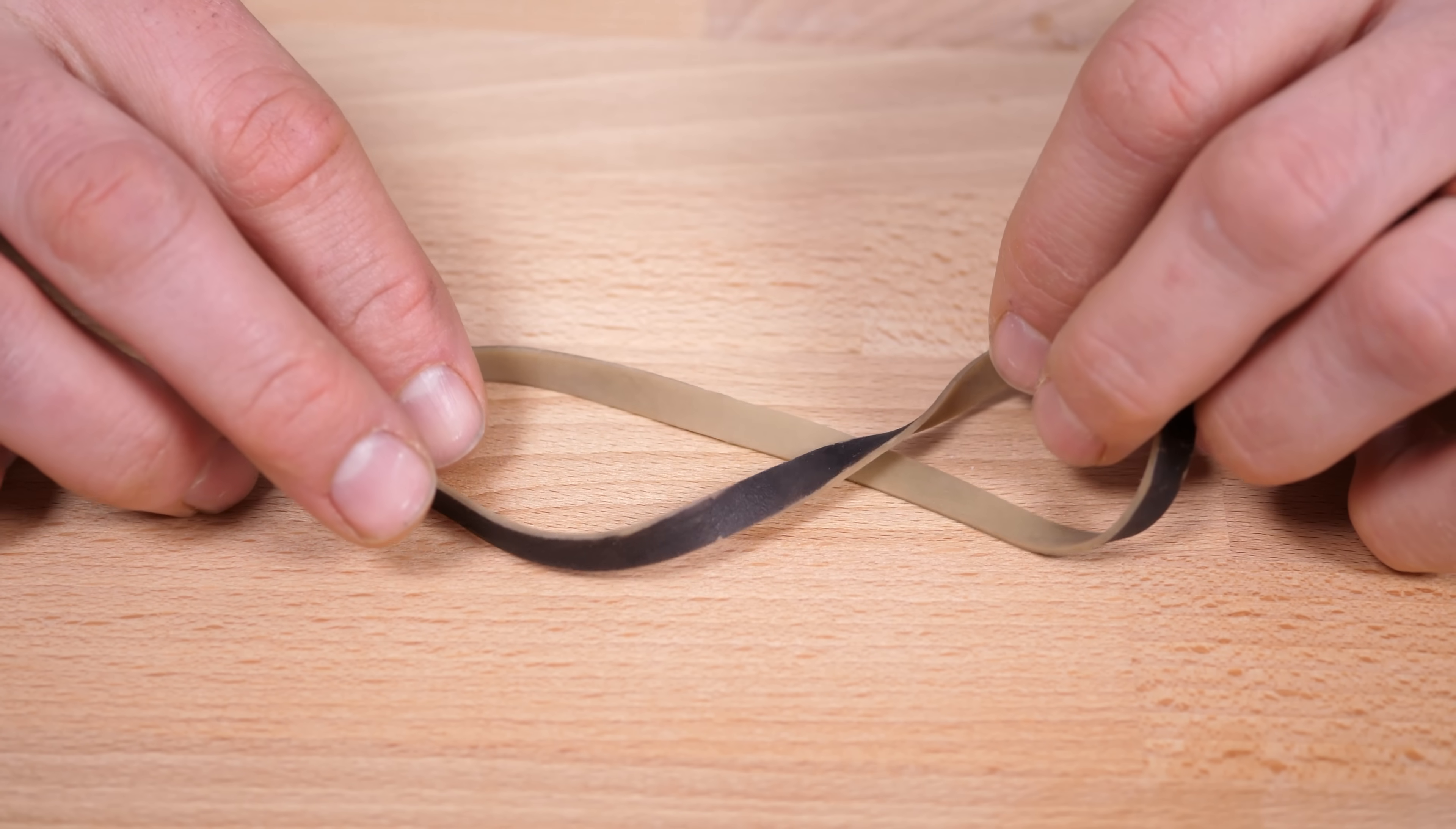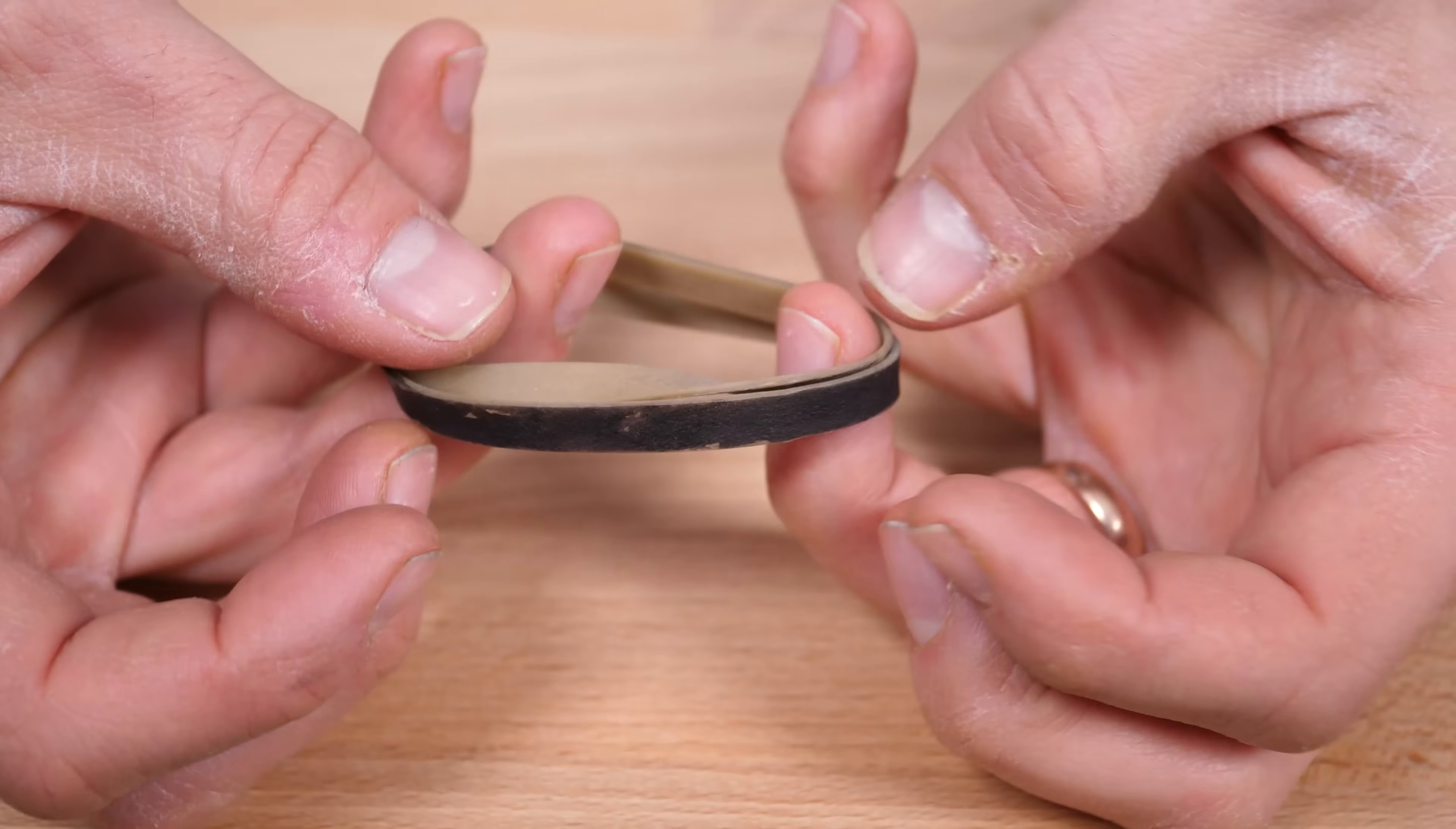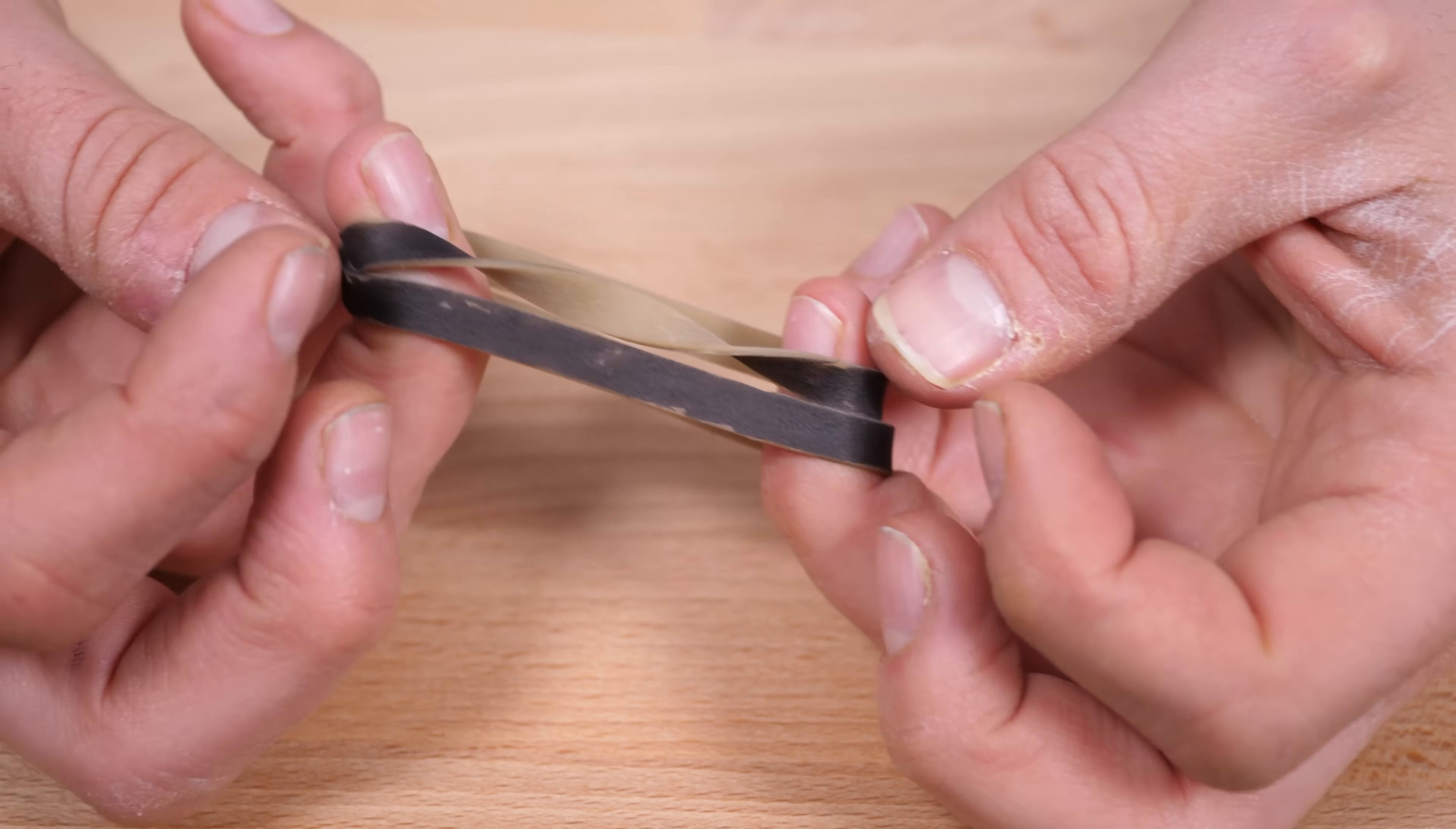You can see that more clearly with this rubber band. See, I've painted the outside black, and you can see that some of the inside is now on the outside. If I bunch that part up, you can see this half twist puts the inside on the outside, and this half twist puts it back on the inside. Those two half twists together make a full twist.